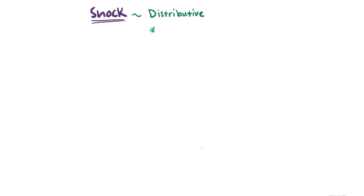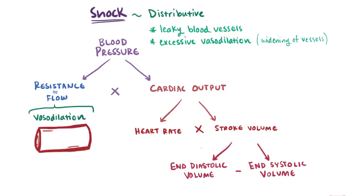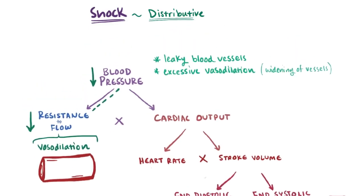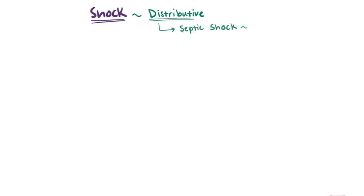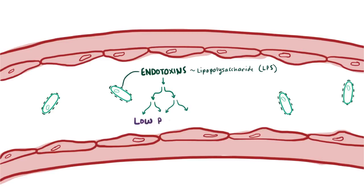The third main category of shock is called distributive shock, where there's typically a leakiness of blood vessels and an excessive amount of arterial vasodilation, or widening of the peripheral blood vessels, which is one of the components of vascular resistance. If arterioles dilate, vascular resistance to blood flow goes down and blood pressure goes down, leading to less perfusion and distribution of blood to organs and tissues. The most common type of distributive shock is septic shock, from pathogens in the blood. Endotoxins — large lipopolysaccharide molecules, sometimes called LPS — found in the outer membrane of gram-negative bacteria cause a cascade of events that ultimately leads to lowered perfusion.